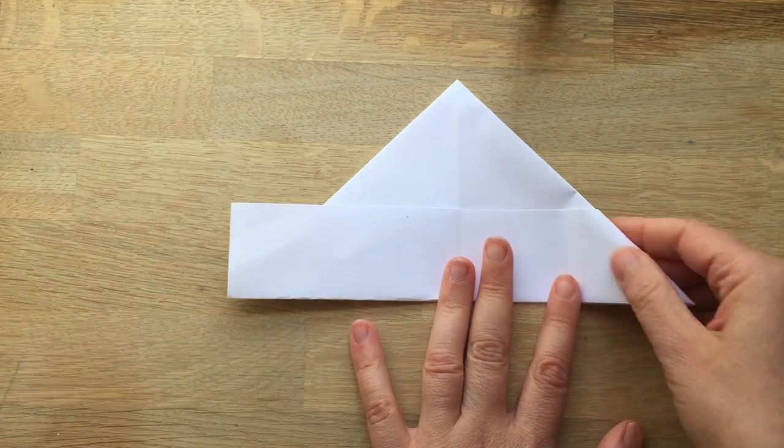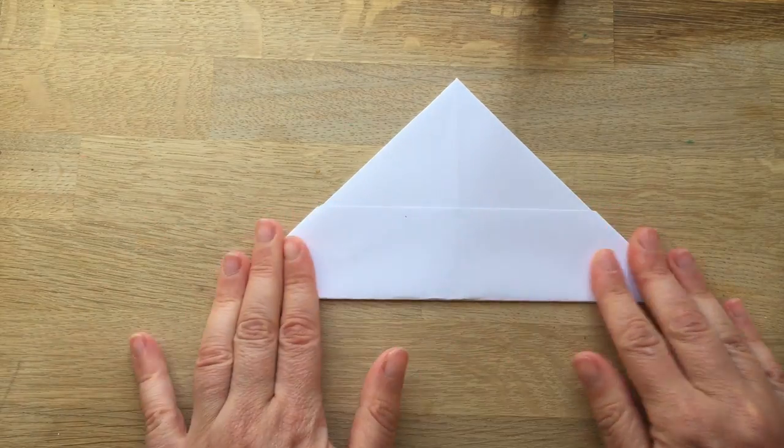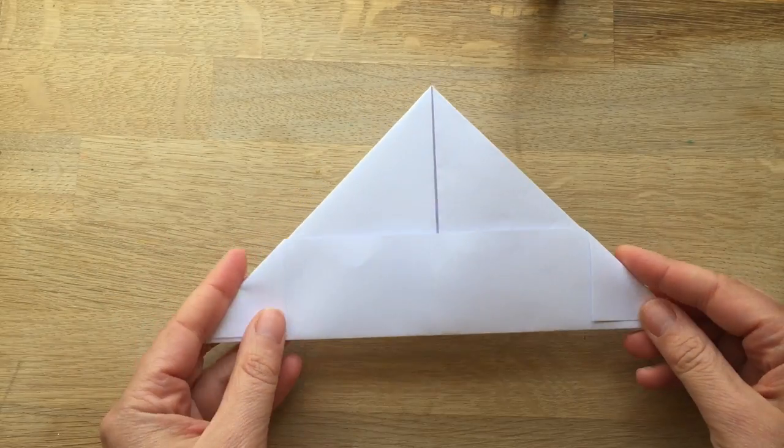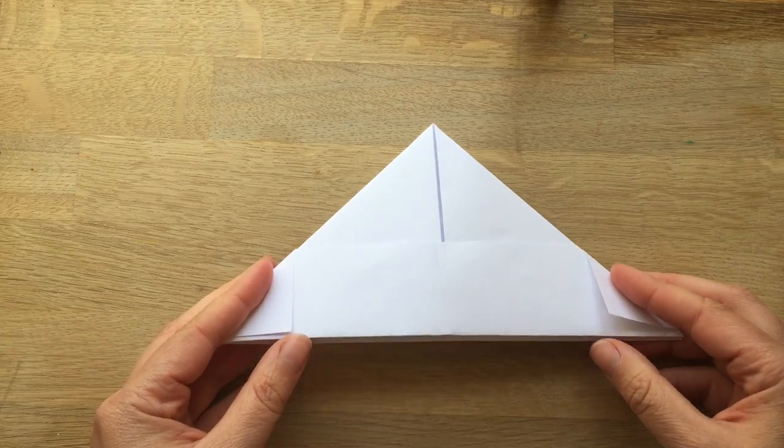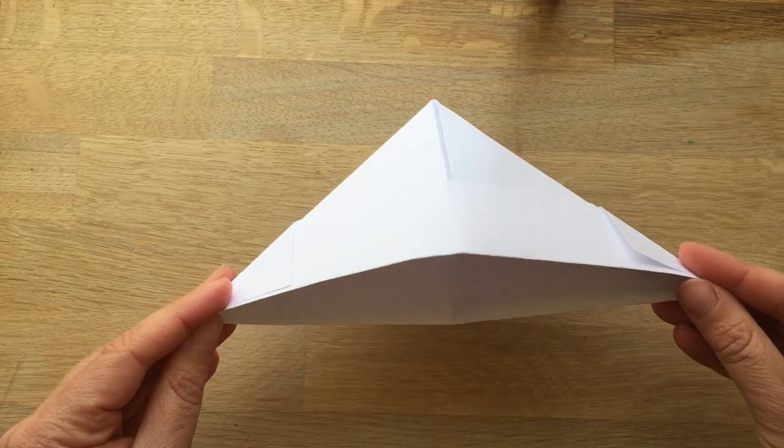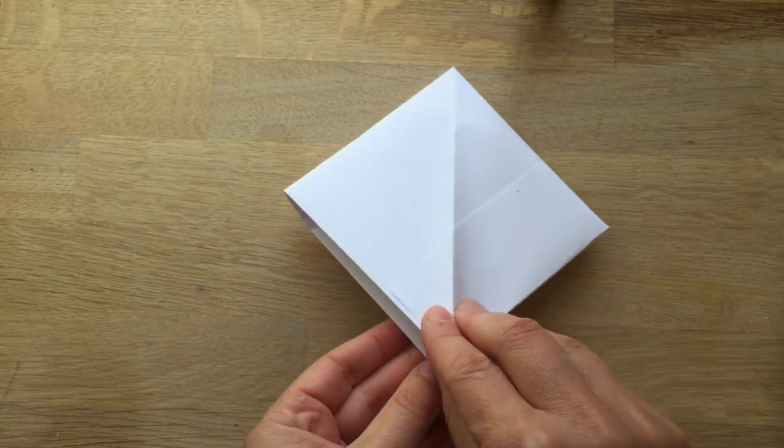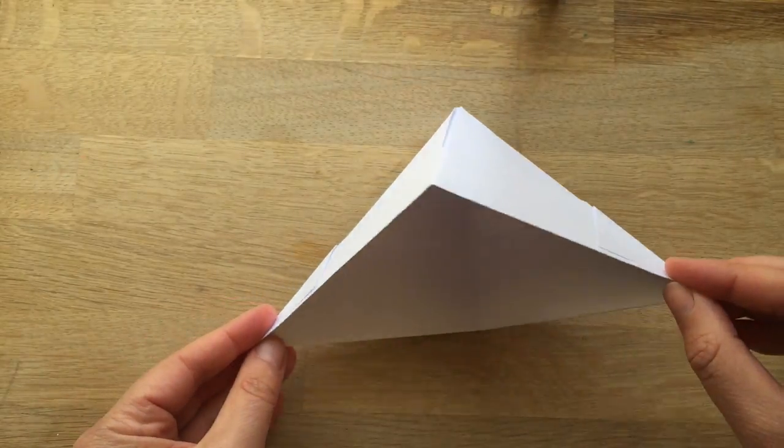And again you tuck it in. So now you've got this sort of triangular shape. Now here comes a clever bit - we always call it the magic bit. You take the corners and you see I'm pushing it like that in. Did you see that? You push it...